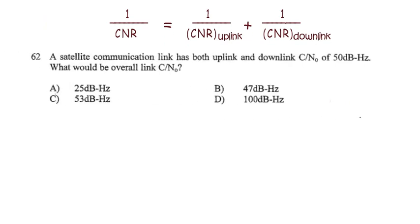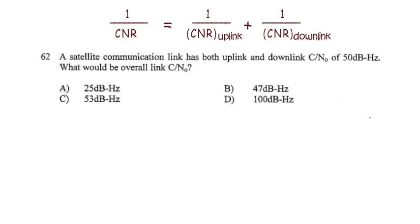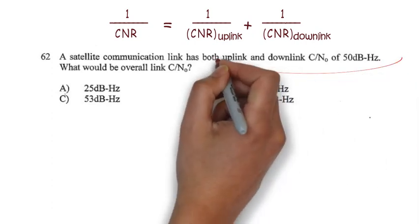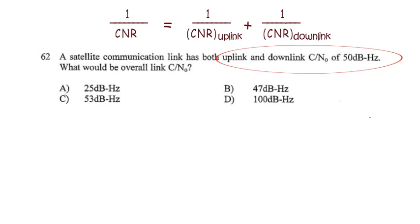Now here is a question asked in ISRO 2014 exams. The question is that a satellite communication link has both uplink and downlink carrier to noise ratio equal to 50 dB-Hz. And they have asked what would be the overall link carrier to noise ratio value. So to solve the question, at first convert this 50 dB in normal ratio.